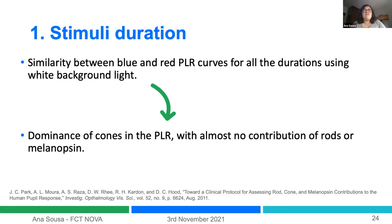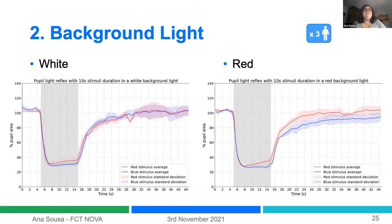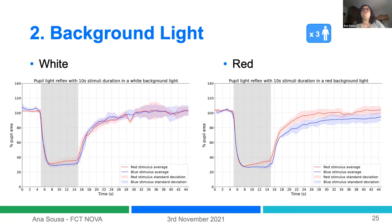We then tested with the red background, with a 10-second stimulus. Comparing the white background graphic on the left and the red background graphic on the right, we can see a small difference between the curves — a slower and sustained response to blue light, which is closer to what we see in the literature. However, we only tested with three participants, so we need to increase our sample size.